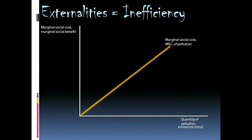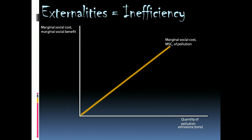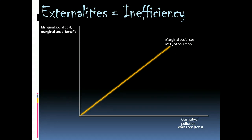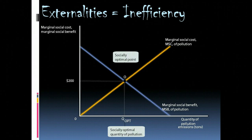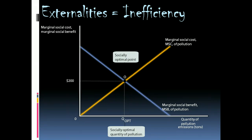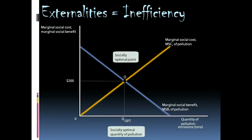Externalities create a certain degree of inefficiency — it's a market failure. We can look at the supply and demand for pollution, where the supply is the marginal social cost and the demand would be the marginal social benefit. Marginal social cost is essentially the supply, because as the quantity of pollution increases, the cost of that decision rises with it. And marginal social benefit is the demand in the sense that as the cost of pollution rises, I'll want less of it.